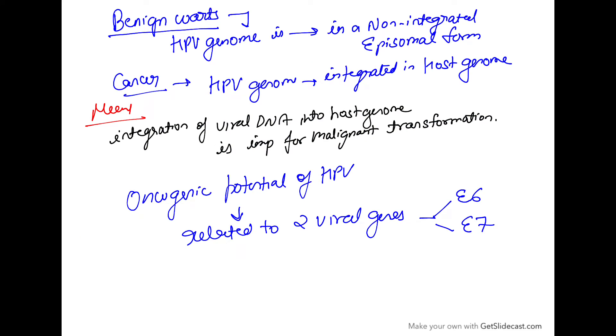Now what is the difference between the types which cause benign diseases versus malignant diseases? In benign warts, the HPV genome is in a non-integrated episomal form. In case of cancers, the HPV genome is in an integrated form into the host genome. So integration of the viral DNA into the host genome is important for malignant transformation.